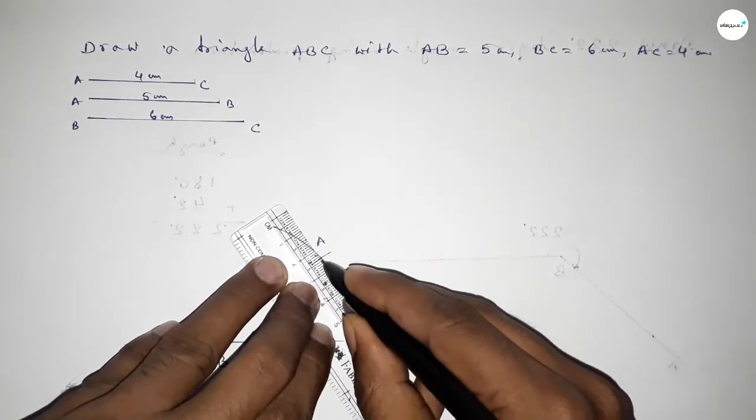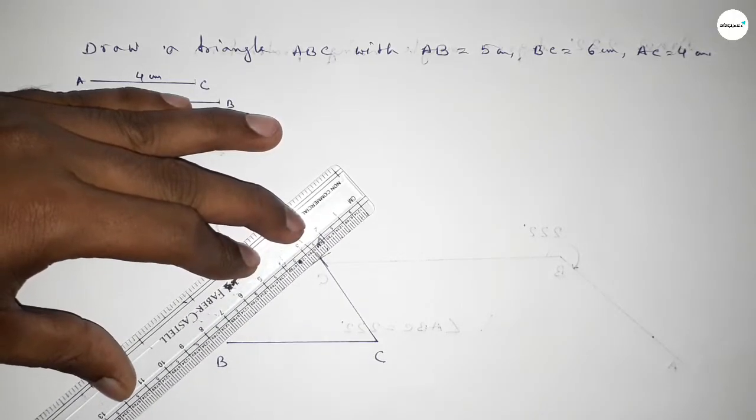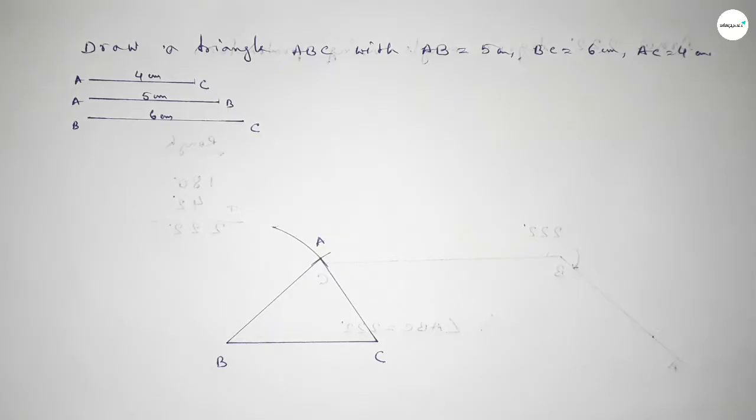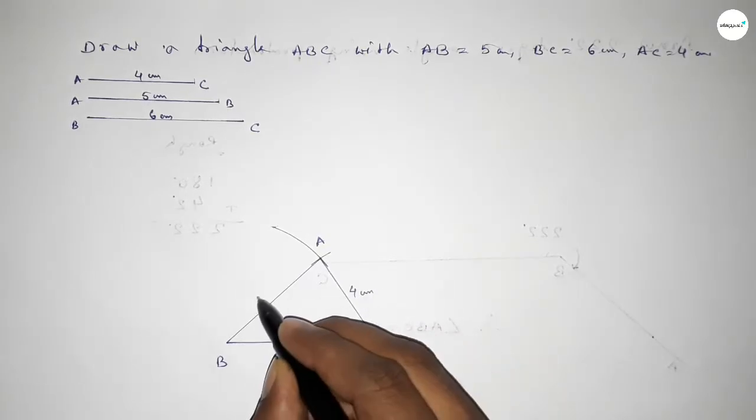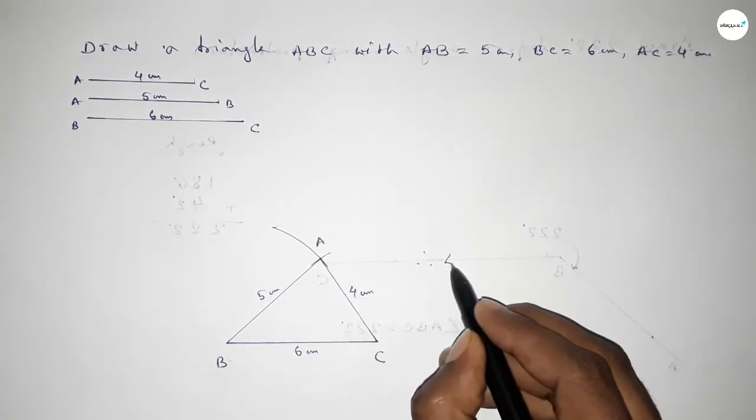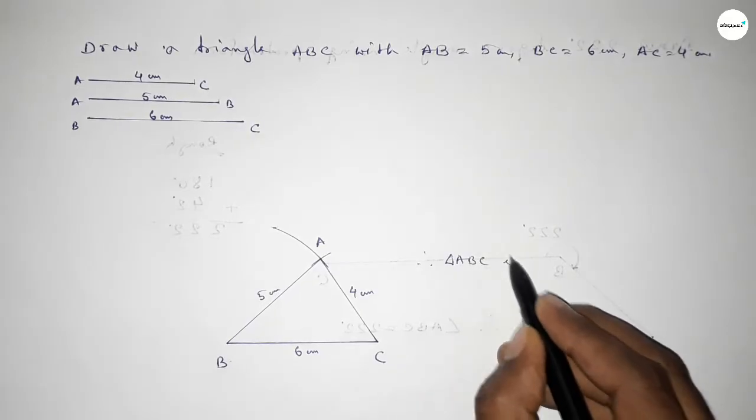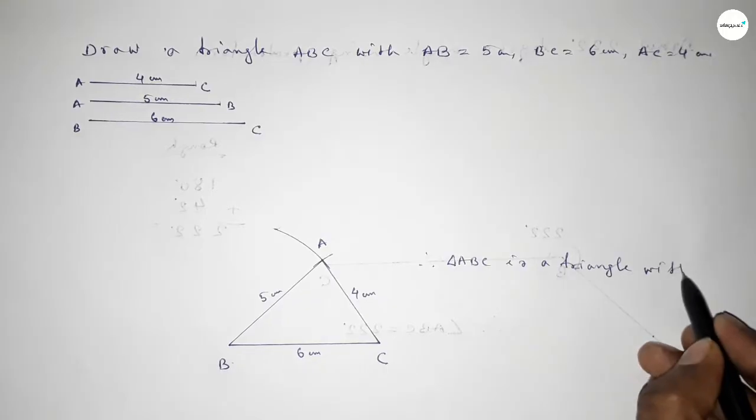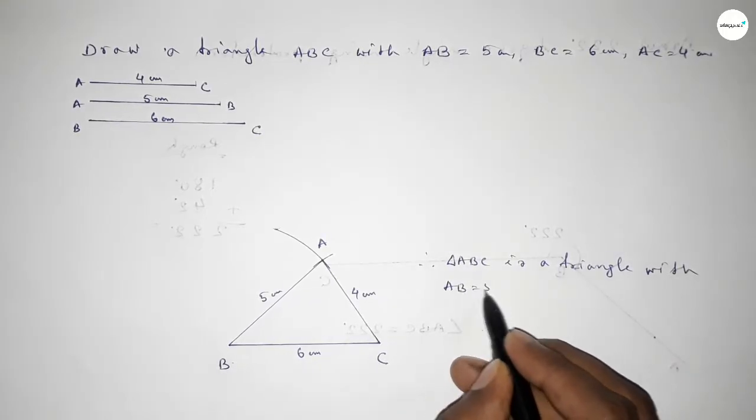Now joining this line, next joining A and B. So BC 6 centimeter, this one 4 centimeter and this one 5 centimeter. So therefore triangle ABC is a triangle with AB equal to 5 centimeter, BC equal to 6 centimeter, and AC equal to 4 centimeter.